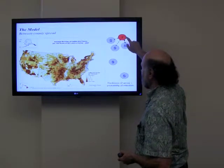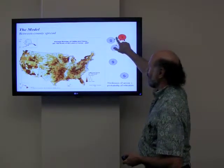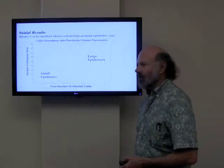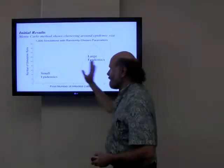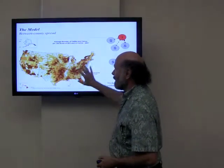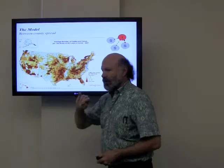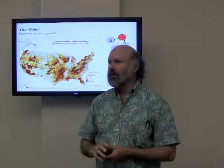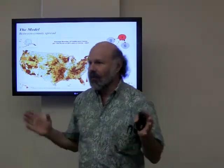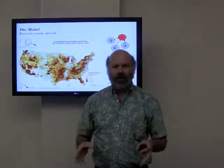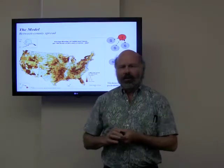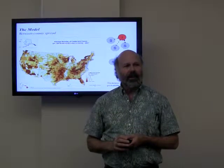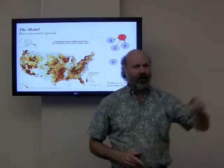Infections can be local — infecting nearby counties — but infected cows can also get on trucks to stockyards for long-range transmission. Everything is stochastic, meaning if you have an infected farm, you infect your neighbors with some probability. Every time we run the simulation we get a different answer, just like a real epidemic. Even if the same farm is the initial infection, the epidemic could spread completely differently — cattle moved east one time, west another. So we run thousands of simulation runs.